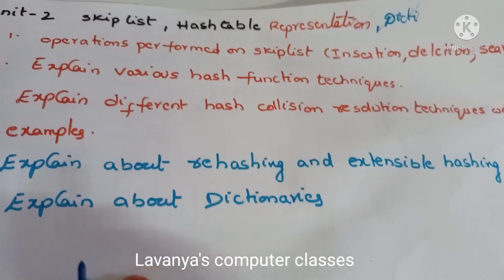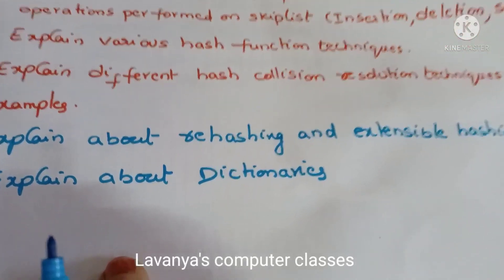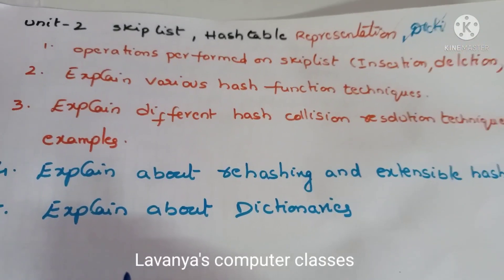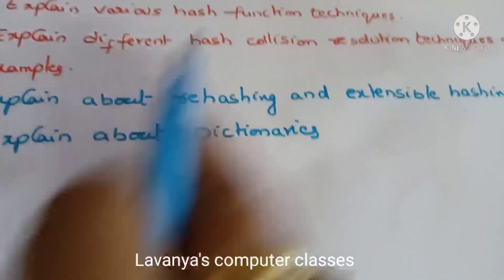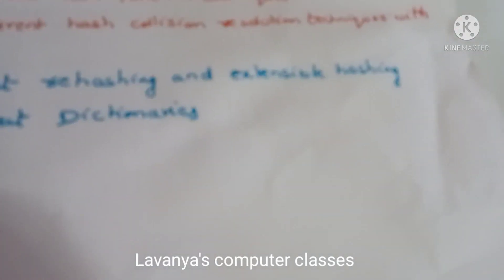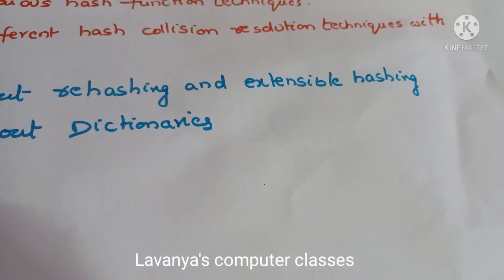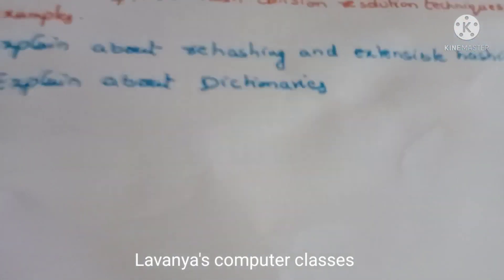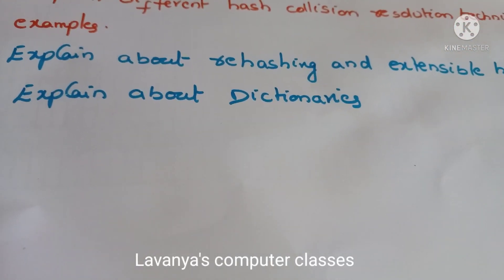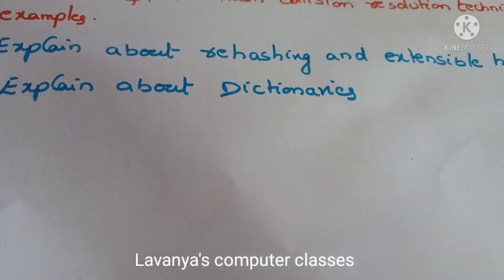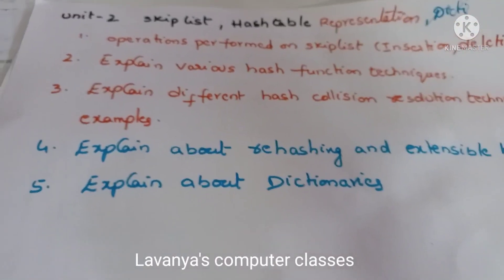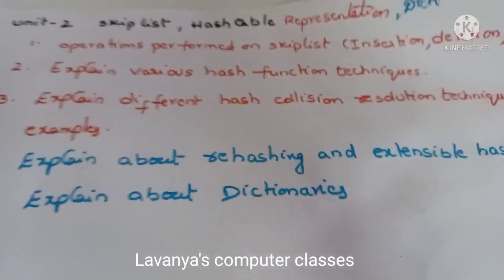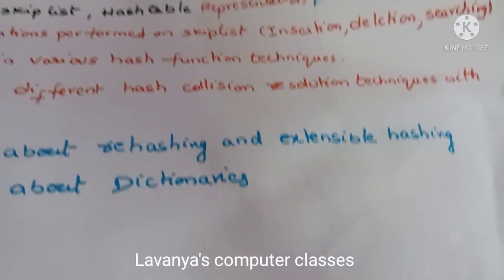Double hashing, separate chaining method, open addressing — everything we have to explain in hash collision resolution techniques. Then they separately ask what is rehashing and extensible hashing. These are different hashing functions. And mostly rarely they ask about dictionaries — what are the operations performed on the dictionaries. These five questions are important in unit 2 according to JNTL syllabus.